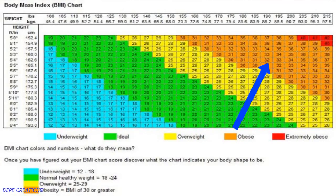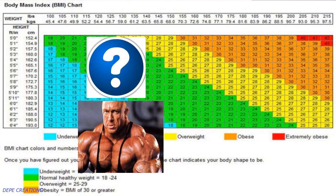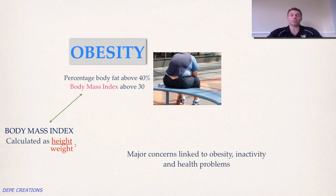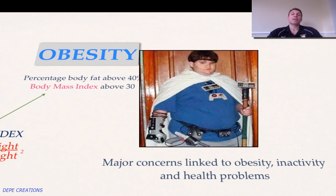The body mass index is calculated as weight over height squared, giving a figure that can be compared to national average tables. A BMI above 30 means you are classified as obese. However, if you are a bodybuilder with very high muscle mass and low body fat, you can still be classified as obese due to your BMI, even though your percentage body fat wouldn't exceed 40%. So there are problems with the classification. That said, BMI is generally accepted as a good indicator of health risk, and that link between obesity and inactivity is why we study it on this course.